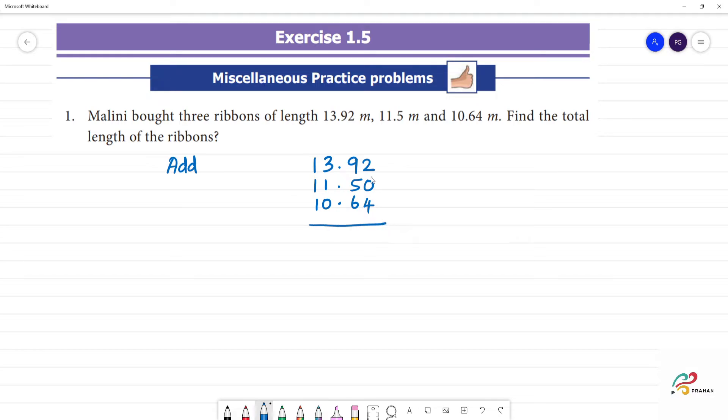4 plus 2 is 6. 6 plus 5 is 11. 11 plus 9 is 20, with a reminder of 2. Now 3, 5 is 6. 1, 2, 3. So the answer is 36.06.